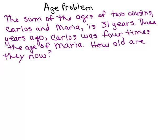All right, we're going to do this age problem. The sum of the ages of two cousins, Carlos and Maria, is 31 years. Three years ago, Carlos was four times the age of Maria. How old are they now?